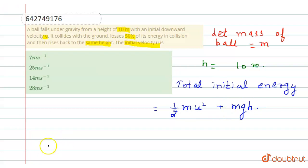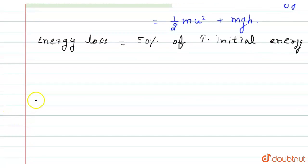Now energy loss is equal to 50% of total initial energy. So 1/2(1/2 m u² + mgh) = the energy lost.